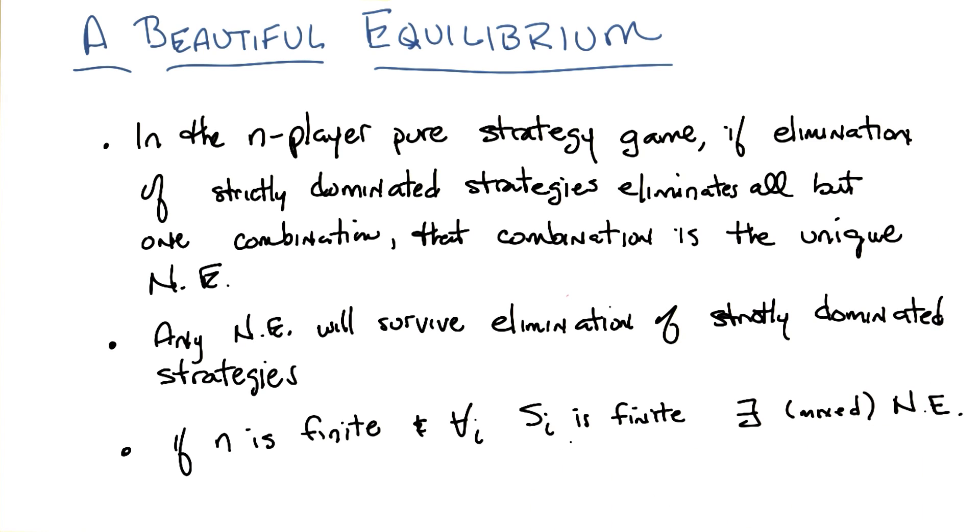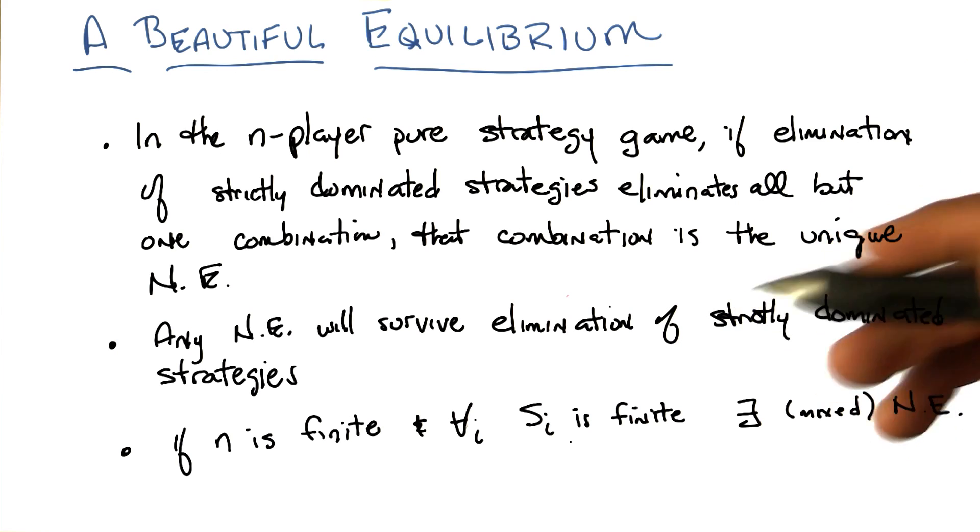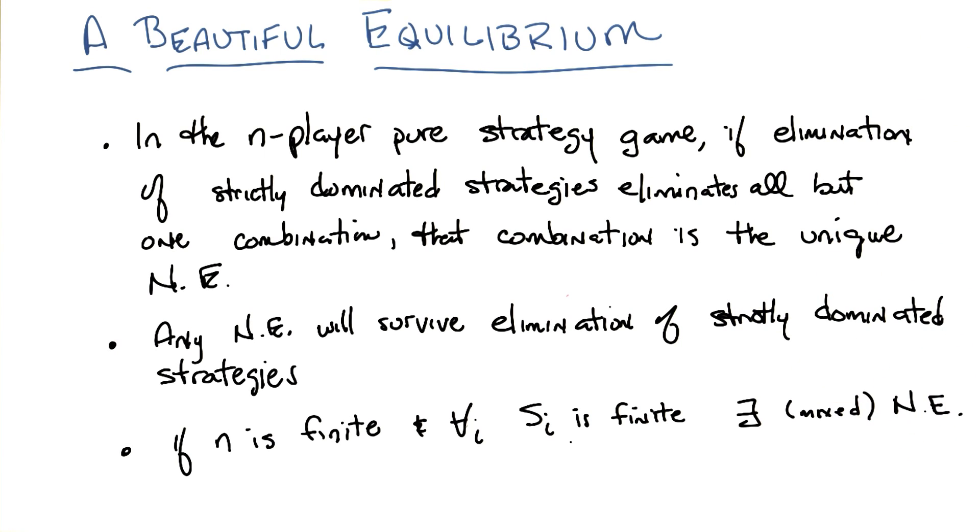In other words, you're still in a finite game. Then there exists at least one Nash equilibrium, which might involve mixed strategies. So you're saying there's always a Nash equilibrium? Yes, possibly mixed, for any finite game.